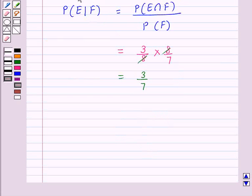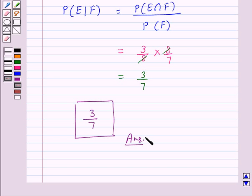So the probability of E given F is equal to 3 over 7. Hence the answer for this question is 3 upon 7. So this completes our solution. I hope the solution is clear to you. Bye and have a nice day.